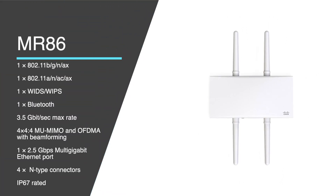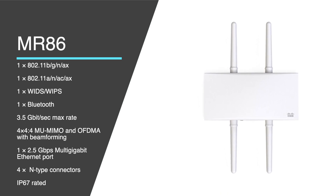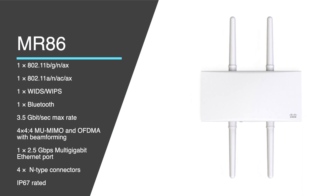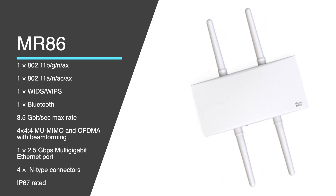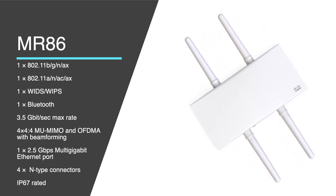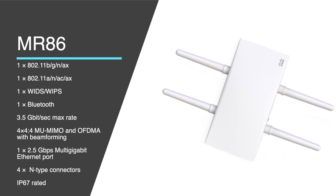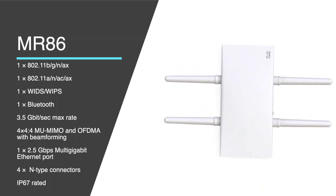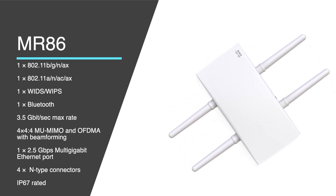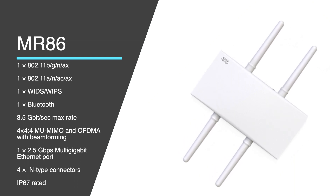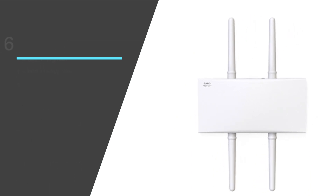Finally, we have the MR86. This AP brings the capabilities of the MR76 a bit higher, with the same number of radios but now with 4x4 and 4 spatial streams for MU-MIMO, increasing the speed to 3.5 Gbps. The interface reaches 2.5 Gbps with a single Ethernet port. If you want the highest performance with Wi-Fi 6, multi-gigabit throughput, and support for high-density environments, this is your AP. It delivers similar capabilities to the indoor MR46, but with a rugged industrial design and N-type connectors for outdoor use.